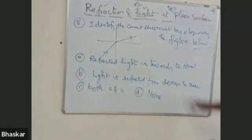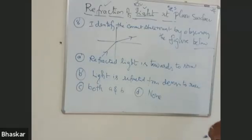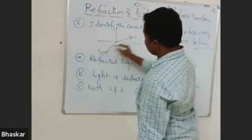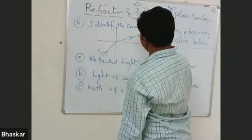Light is traveling from, there are two. So, now, this is incident ray, this is refracted.